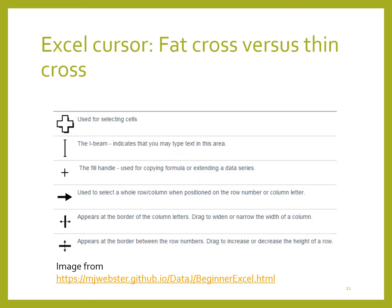As you move your mouse around Excel, you will find that the cursor changes shape, and the shape indicates what function is available. The fat cross is for selecting cells, and if you drag you can select multiple cells. The I-beam indicates that you are ready to type in a cell or in the formula bar. The thin cross appears near the corner of a cell and is used to copy a formula from one cell to another. A single arrow highlights an entire row if you're on the side, or a column if you're on the top in the gray area. The double-headed arrows are for changing the size of columns and rows.